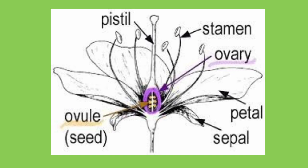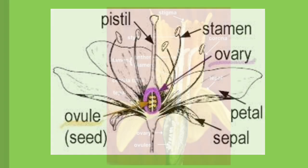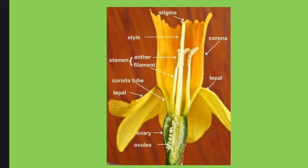Inside the ovary you can see something called the ovules, which we'll talk about in a minute. The job of the ovary is to produce the ovules — that's its whole function.